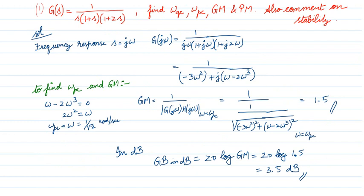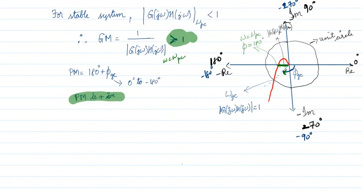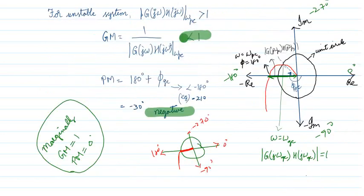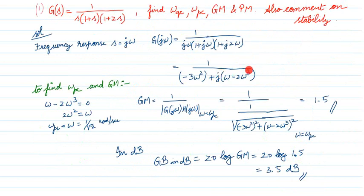Now, our objective is to solve mathematically. Here we come to the main part of the lecture. An open-loop transfer function is given, and we are asked to find the gain crossover frequency, phase crossover frequency, gain margin, phase margin, and comment on stability. First, I find the sinusoidal frequency response by substituting s = jω, obtaining a real part plus imaginary part.